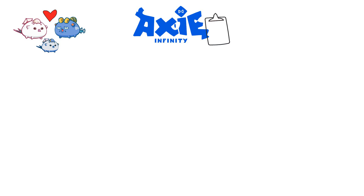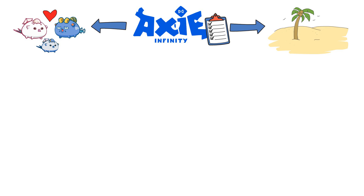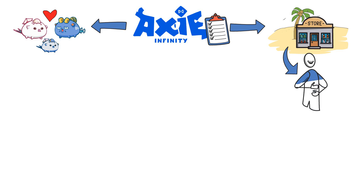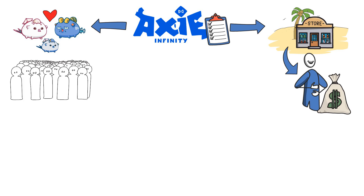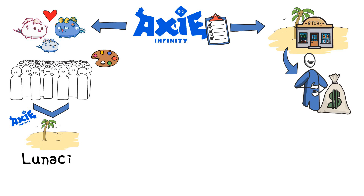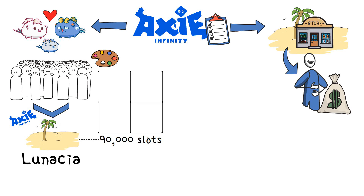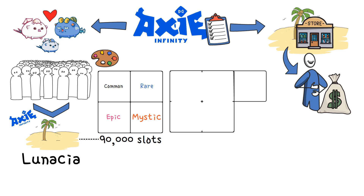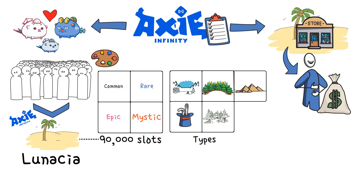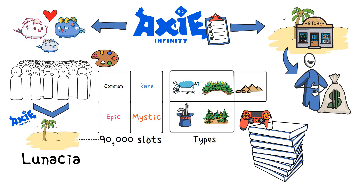Apart from breeding capabilities, Axie Infinity also has some unique features. Along with growing their digital pets, gamers can own a piece of land and use it to establish in-game shops or other facilities that can earn them additional profits. Users are invited to customize their lands in the Axie Infinity universe, also known as Lunessia. The digital world has over 90,000 slots categorized into 4 levels of rarity — common, rare, epic, and mystic — and these pieces of land can have 5 types: arctic, forest, genesis, mystic, and savannah.